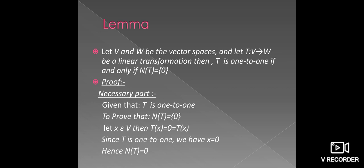First is the necessary part. Given that T is one-to-one, we have to prove that N(T) equals the singleton set {0}. Let X belong to vector space V. Then T of X equals 0, which equals T of 0. Since T is one-to-one, we have X equals 0. If X equals 0, hence the null space N(T) equals {0}.